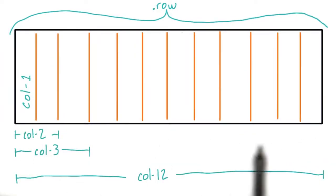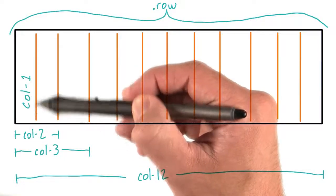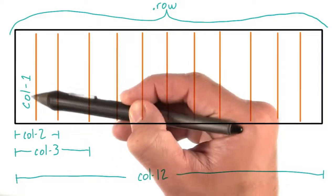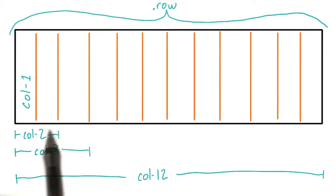Now we need names for all of the columns here, or for elements of different column widths. First one, we'll do column one. Why not? It's one column wide, so we'll just call it column one. If we want an element to be two columns wide, we'll call it column-2 to indicate that it's two columns wide.